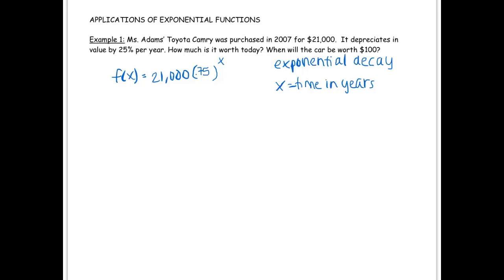Which makes sense because after the first year, I would take 21,000 and multiply by 0.75. After two years, I would take 21,000 and multiply by 0.75 twice. We can maybe write also that f of x equals the car's value, or how much the car is going to be worth.